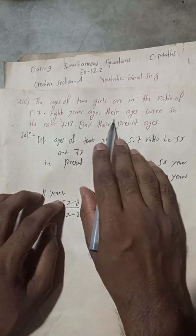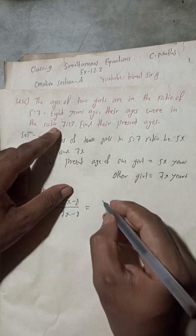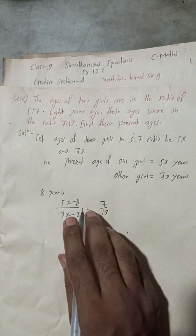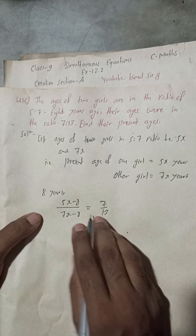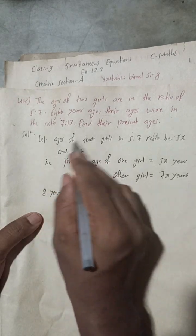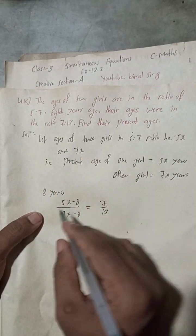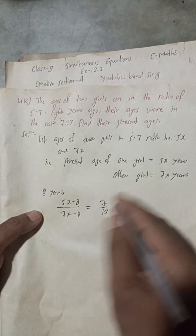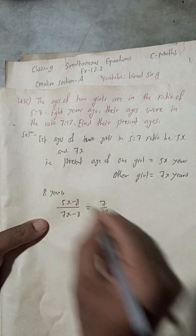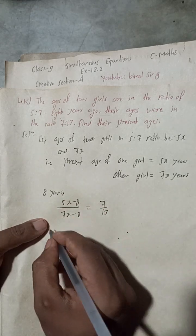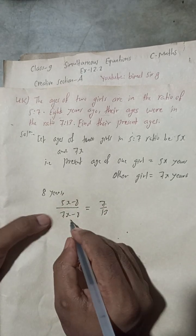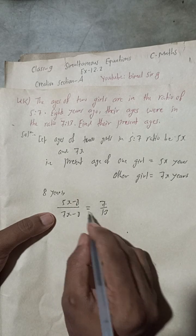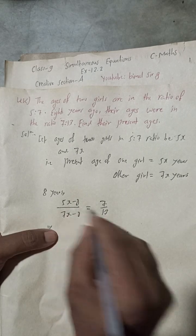Eight years ago their ages were in the ratio 7 by 13, so we write: (5x − 8) / (7x − 8) = 7 / 13. Now we cross multiply this equation.